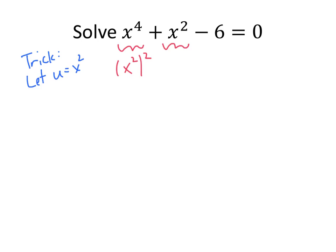And when I do that, what I end up with is u squared plus u minus 6 equals 0. And again, that's a quadratic that's not too bad to solve. It factors as u plus 3 times u minus 2. That gives us the solutions u equals negative 3 and u equals 2.